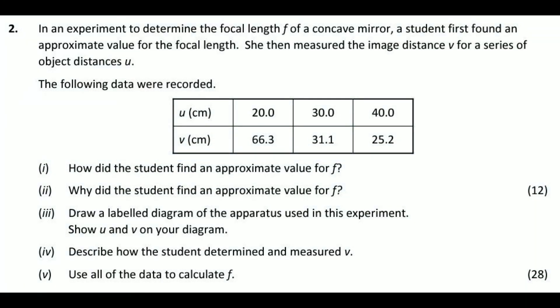So there are two ways you can generally tackle these questions. You can either tackle them via calculation or via graph. Taking a look here at the 2023 question two on the higher level paper. You can see here they've given three different values of U and three different values for V. Now, they've given it in centimeters. You can actually do the calculations in centimeters, but let's get into good habits changing to meters. Just taking a look, parts one and two we've already talked about. Part three is a label diagram. Part four is describe how the student determined and measured V. And part five is use all of the data to calculate F. You can use a graph or you can use calculation. I'm going to do this example by calculation.